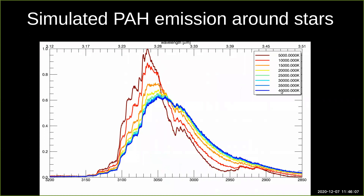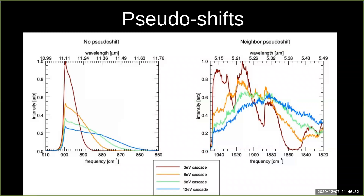When you put that all together and model different stellar temperatures — the blackbody temperature of the star — you can see how the profile of the PAWs changes with different environments. One would maybe naively see that the peak position is changing, but that's not changing in the same way as in a thermal equilibrium sense. What's really happening is pseudo-shifts: if you have an isolated feature, your peak position doesn't change. But in a congested region, it appears that your peak position is changing because the long tails from neighboring features are slipping under their lower-energy neighbors and propping them up — making it look like peak positions are shifting.